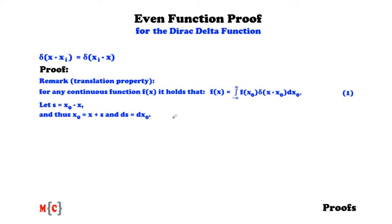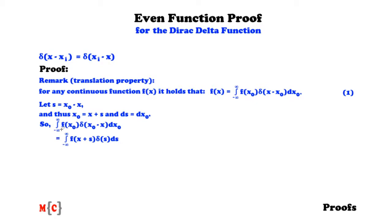Now let's consider the following integral: the integral from minus infinity to infinity over f(x_0)δ(x_0 - x)dx_0 is equal to the integral from minus infinity to infinity over f(x + s)δ(s)ds. So what we have done here is replace x_0 by x plus s, we've replaced x_0 minus x by s, and we have changed the integration from integrating over the variable x_0 to integrating over s.